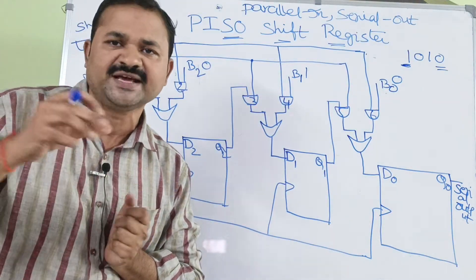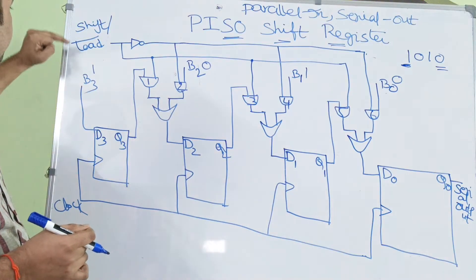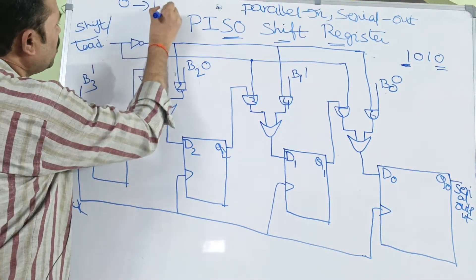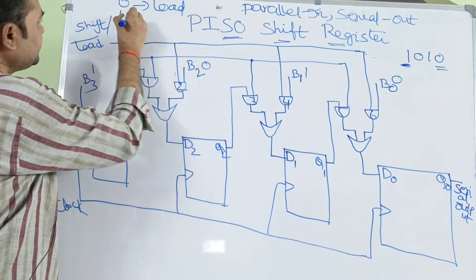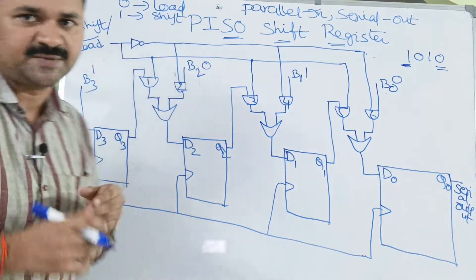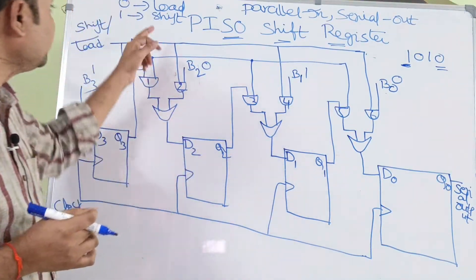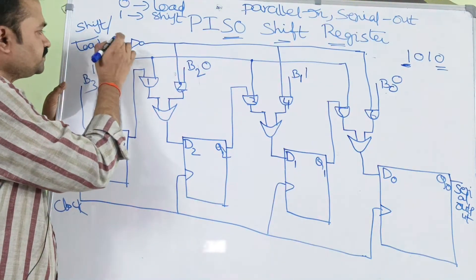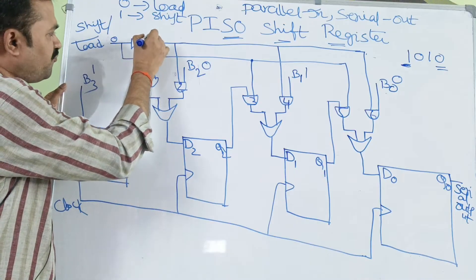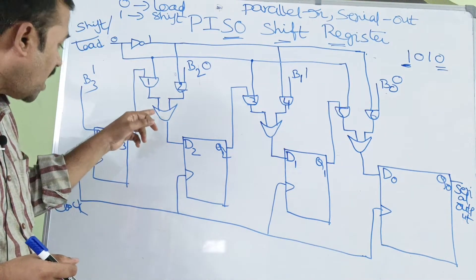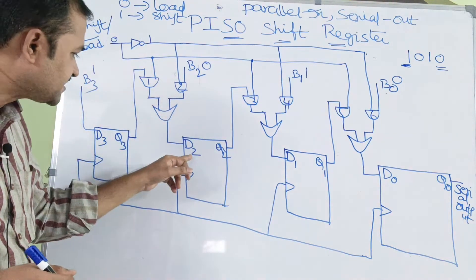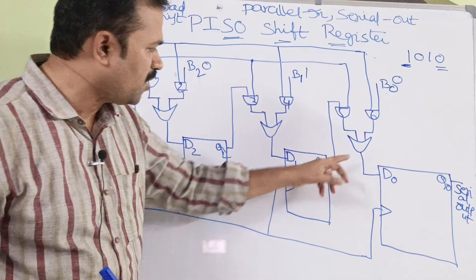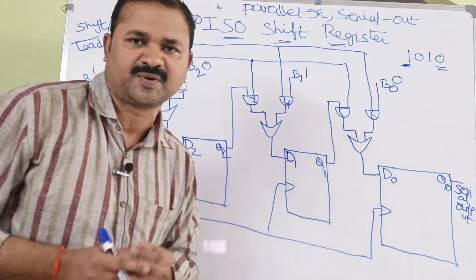In order to perform the operation, we are using a control input called shift by load bar. If this input is 0, then load operation will be performed. If this input is 1, then shift operation will be performed. The output of the OR gate will be supplied as input to the flip-flop.